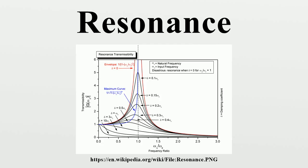Some systems have multiple distinct resonant frequencies. Resonance phenomena occur with all types of vibrations or waves. There is mechanical resonance, acoustic resonance, electromagnetic resonance, nuclear magnetic resonance, electron spin resonance, and resonance of quantum wave functions.